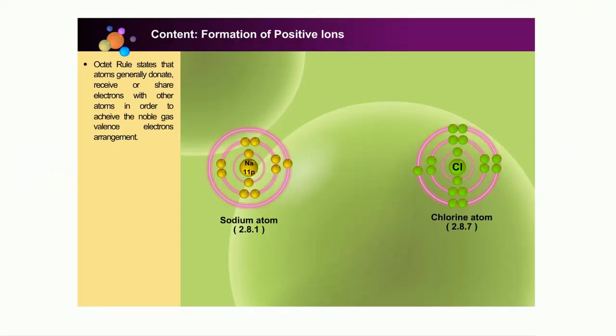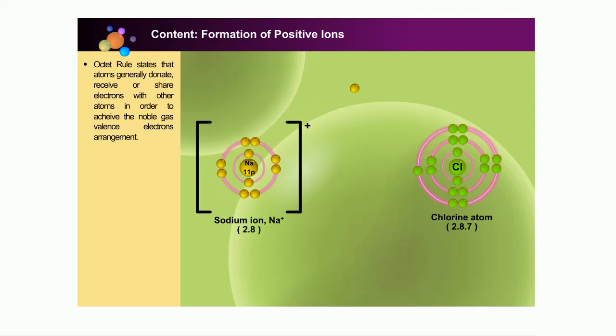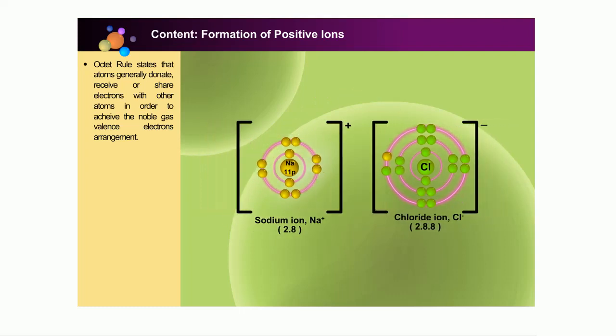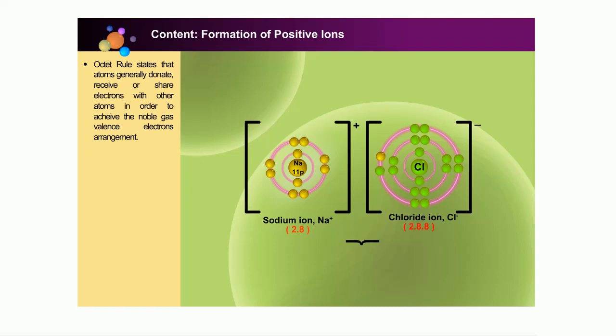We have learnt that atoms of metals donate electrons, while atoms of non-metals receive electrons in order to achieve the noble gas valence electron arrangement. This is called the octet rule. Atoms form ions to be chemically stable. The octet rule can be used to predict the types of bond formed.